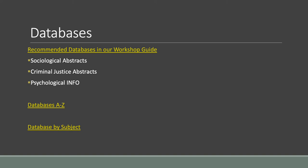Remember that peer-reviewed journals contain research studies. You're looking for studies for which the authors are sharing the results of their original research with the research community in their disciplines. I've also included links to our full list of databases and a way to browse through our databases by subjects like Sociology, Criminal Justice, or Psychology — that's the Databases by Subject link.